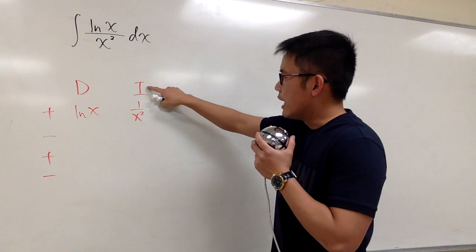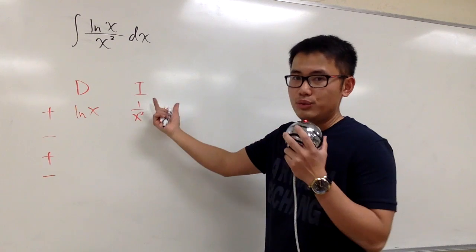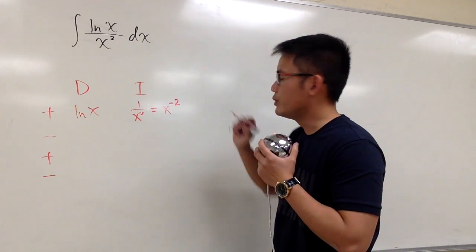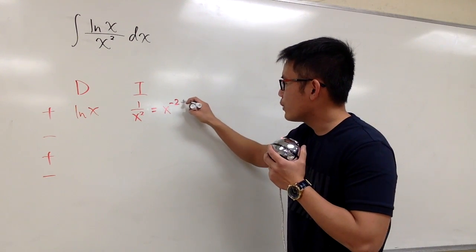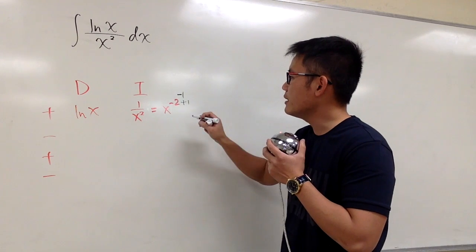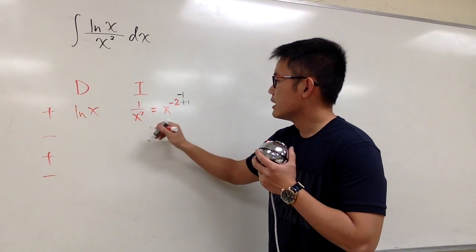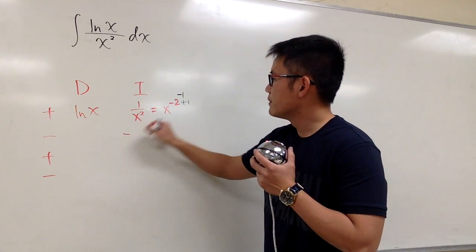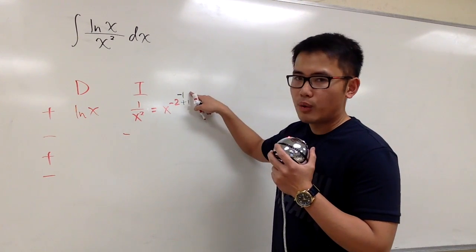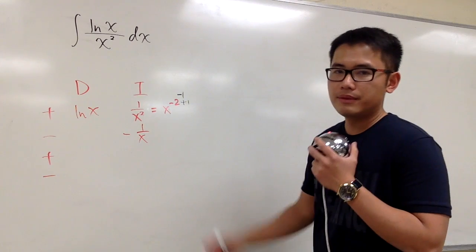So now let's see, how can we integrate 1 over x to the second power? This right here is doable, but then you have to first write this as x to the negative 2. And then to integrate this, I will have to add 1 to the exponent. Negative 2 plus 1 is negative 1, and I will divide it by negative 1. So I will get negative, because I divide it by negative 1, and then it will be x to the negative 1 power. So we will have 1 over x to the first power.